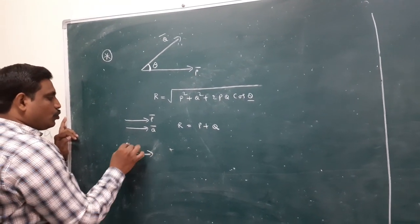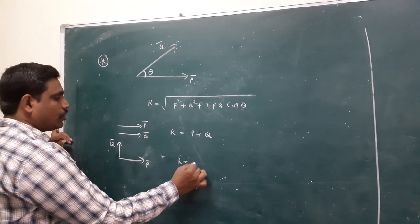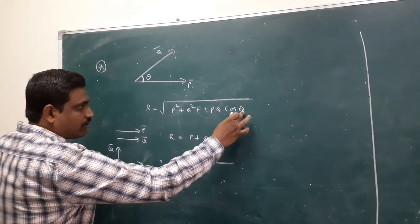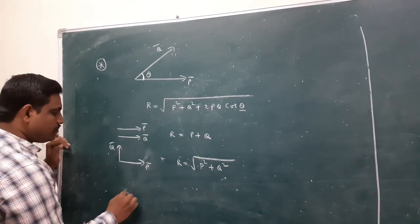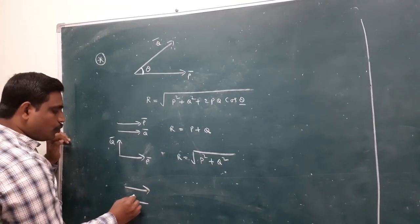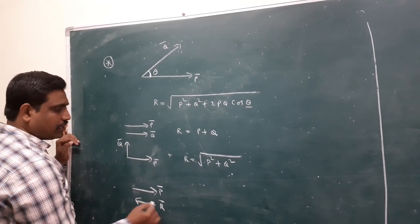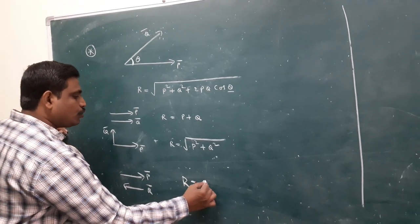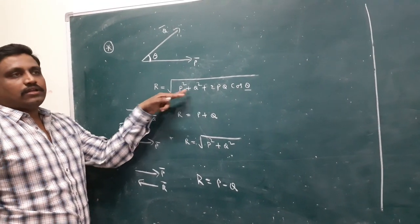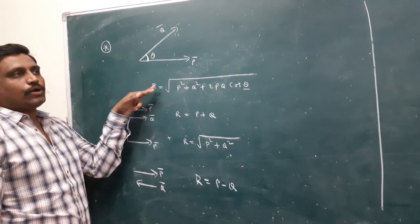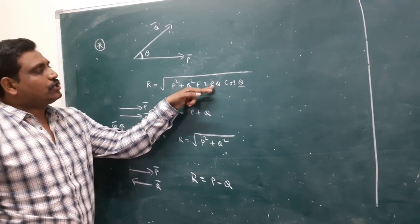If two vectors are perpendicular, theta becomes 90, cos 90 equals zero, so we write directly R equals under root of P² plus Q². If two vectors are in opposite direction — antiparallel — then R equals P minus Q. The full derivative formula according to the parallelogram law is R equals under root of P² plus Q² plus 2PQ cos theta.